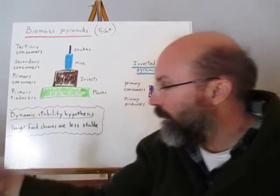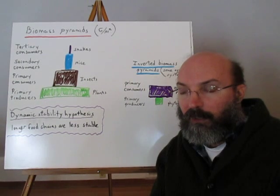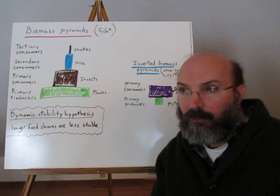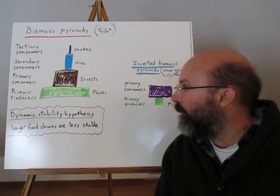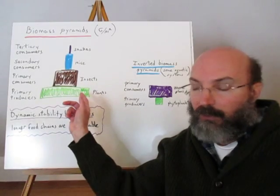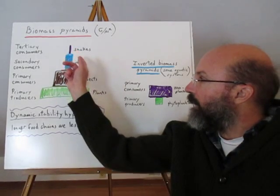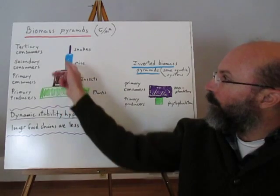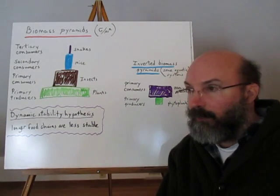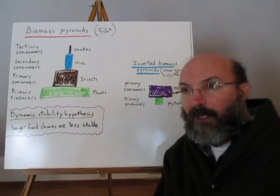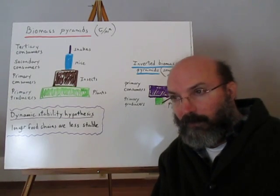Another way to look at food webs is biomass pyramids. Biomass is obtained by taking a section of a trophic level, baking it down, and massing the remaining carbon to determine how much biomass exists at each level. Normally you see a pyramid: more biomass in plants than insects, then mice, then snakes, with fewer snakes than mice. However, biomass pyramids can be inverted in aquatic systems where there is a high turnover rate — phytoplankton multiply very rapidly, while zooplankton don't die as quickly — so you end up with more primary consumers than primary producers, inverting the pyramid.